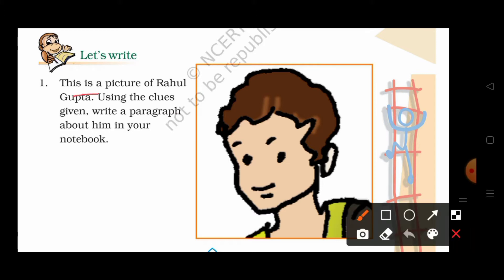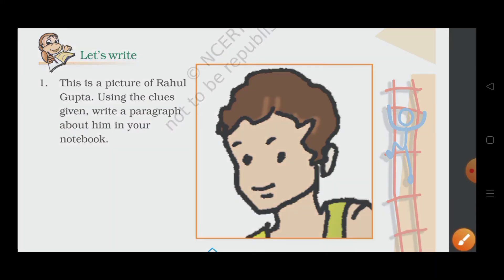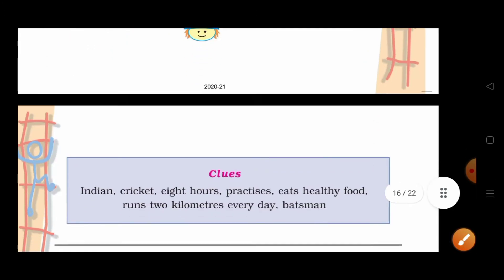This is a picture of Rahul Gupta. Yeh Rahul Gupta ki picture hai. Using the clues given, write a paragraph about him in your notebook. Kuch clues niche diya hoi hai aur aapko unka use kerke paragraph write kerna hai. Aur woh clues hai: